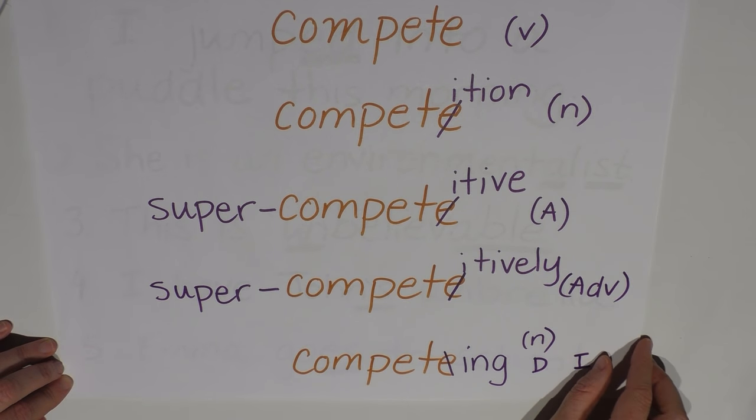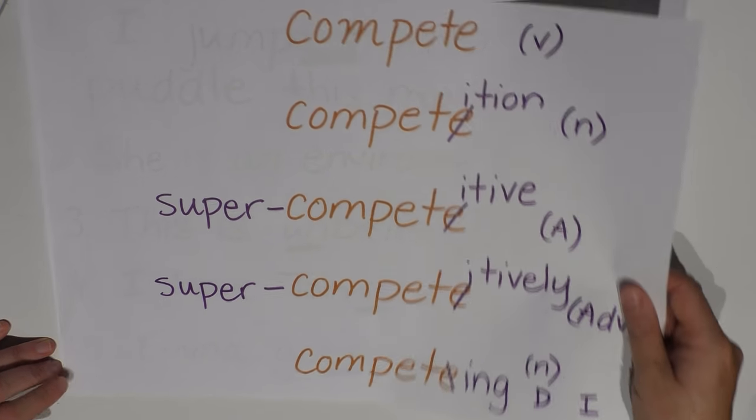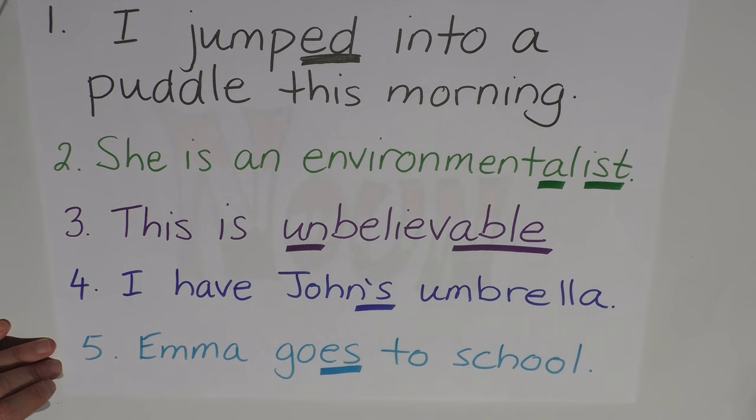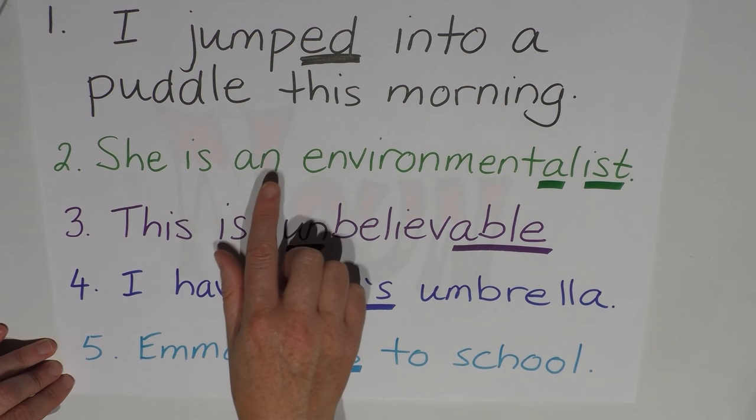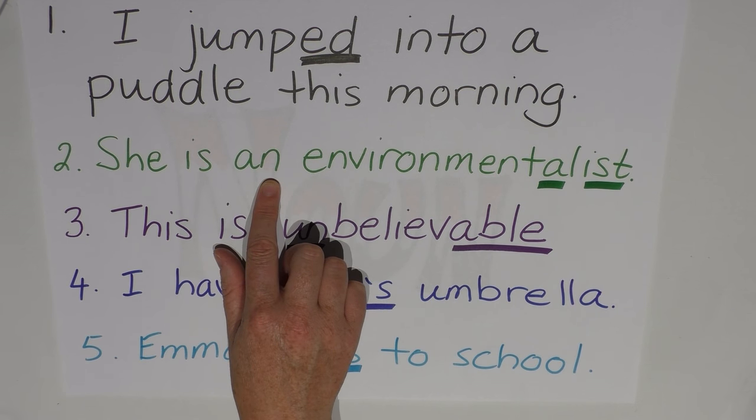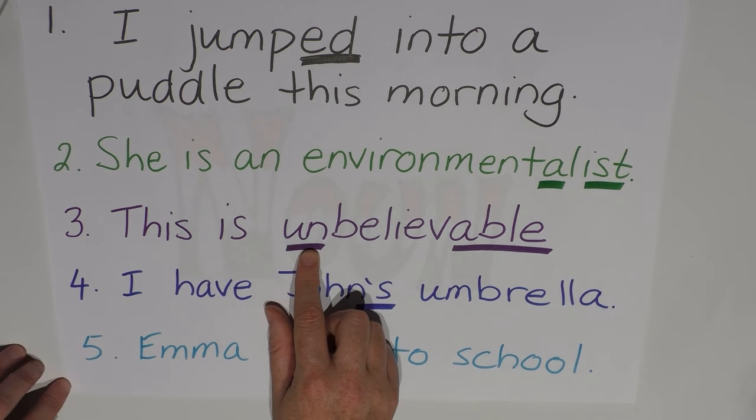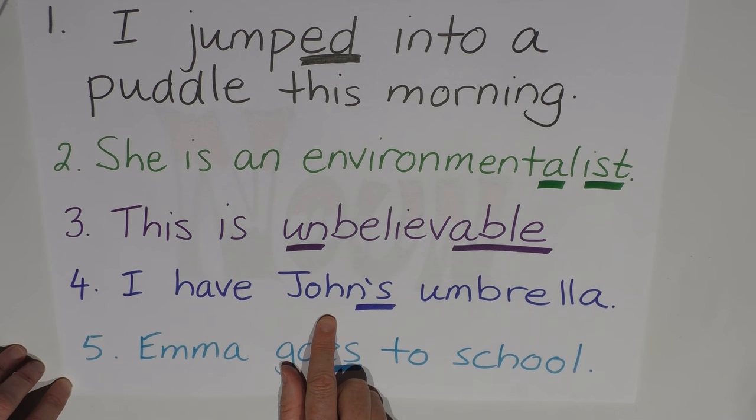Let's take a look at a few other examples to make sure that we understand. So can we identify whether the morphology underlined in these examples are inflectional or derivational? So let's give it a go. I jumped into a puddle this morning. She is an environmentalist. This is unbelievable. I have John's umbrella. Emma goes to school.